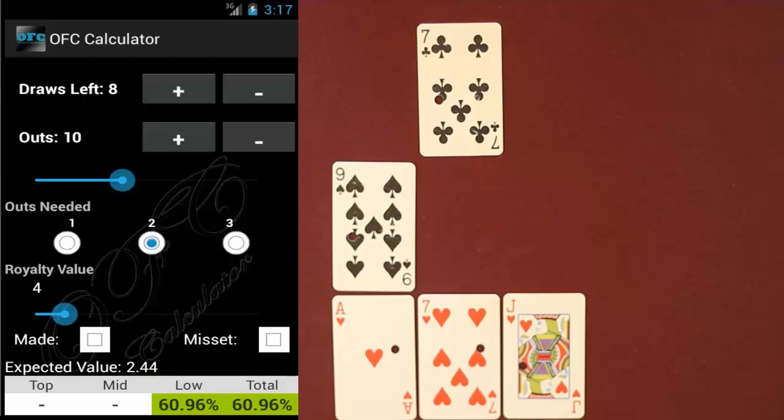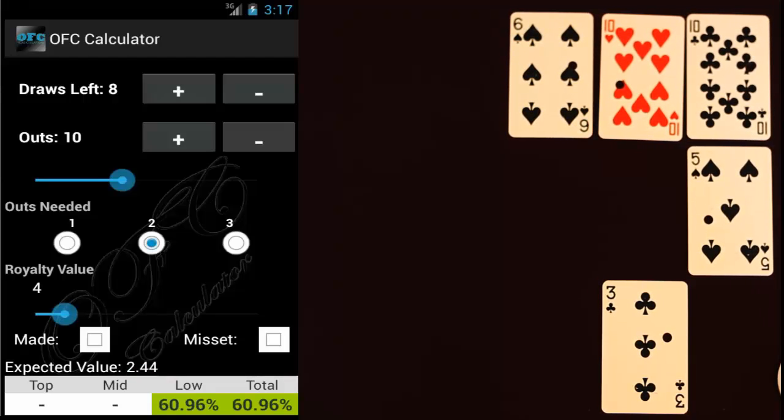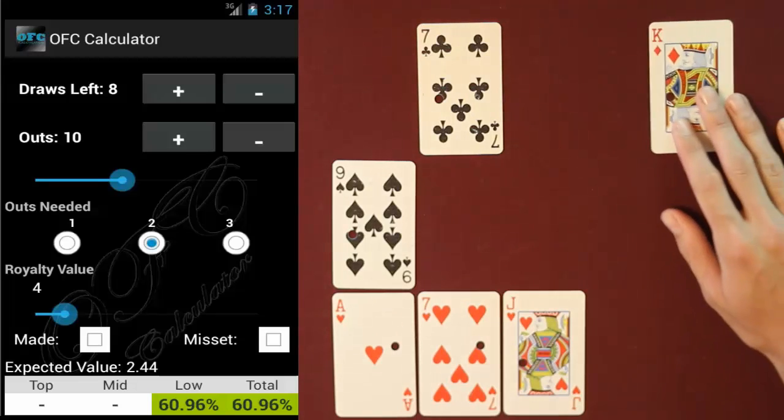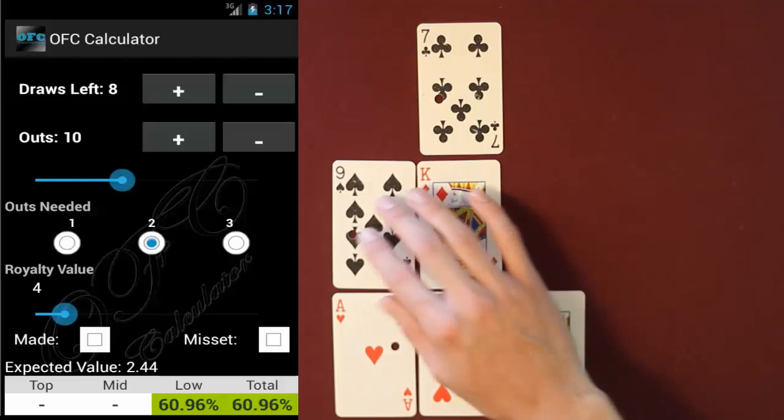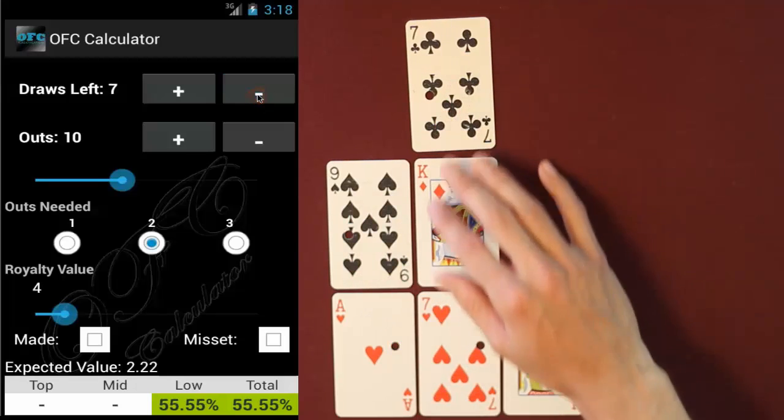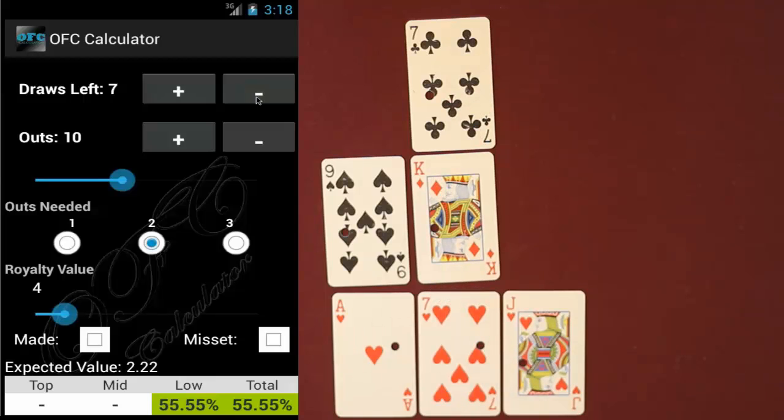Now let's look at our opponent's hand for a second. The opponent's hand will always be depicted with the darker background. Now let's say we draw the king of diamonds and decide to place it in the middle. The first thing we're going to do is decrease the number of draws by one because we just used up one of our draws. And also we're going to decrease our outs by one because if you remember our opponent had a heart. Now if you notice we're only working with the low hand right now because our middle and top hands really aren't defined enough for the calculator to be of any use. You can see how changing the number of draws remaining and the number of outs we have affects our EV and our percentages.